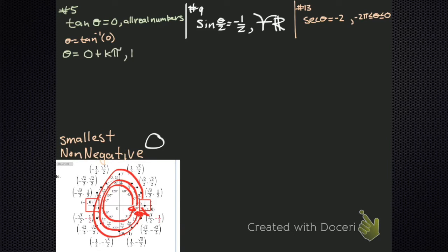It's the smallest non-negative, plus multiples of pi around, where k is an integer. That zero happens every pi. Of course, we wouldn't write it with that zero — we write it as kπ. Notice when k is equal to zero, theta is zero — we have that solution. When k equals one, theta is pi — we have that solution. When k is two, theta is two pi. When k is minus one, theta is minus pi. So we're done.